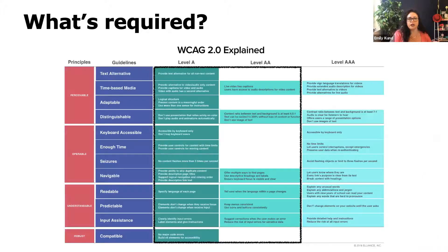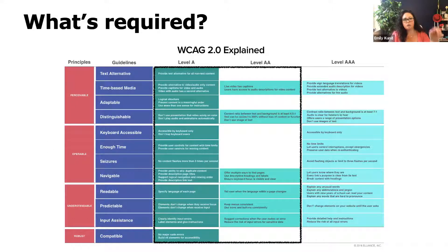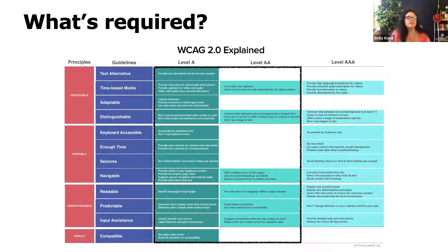I have this chart here and I'll make sure Jeremy has these slides for reference. With perceivable, some of the guidelines are text alternatives, time-based media, adaptable, and distinguishable. The outlined box shows that WCAG level A and level AA is where 508 compliance sits — you have to be up to that level to be 508 compliant. If you wanted to be level AAA, that would be amazing, but there's a cost associated with that. Knowing that if you're at AA, you're good to go.